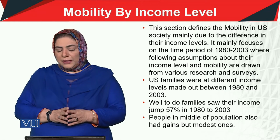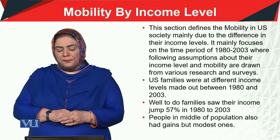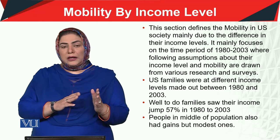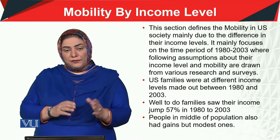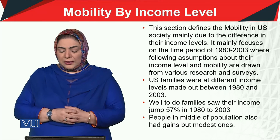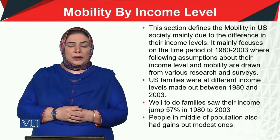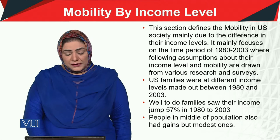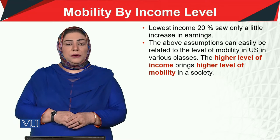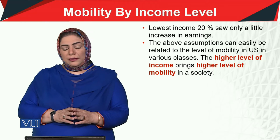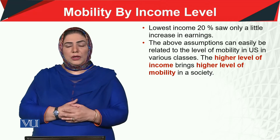U.S. families at different income levels were studied between 1980 and 2003. From 1980 to 2003, U.S. families normally improved 57 percent in terms of their income level. However, people who do not have much income are still living a modest life. Those in the lowest income bracket who do not have the opportunity to live a proper life represented about 20 percent of the whole population.